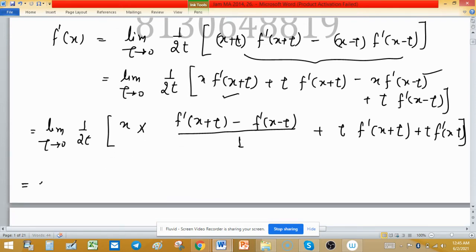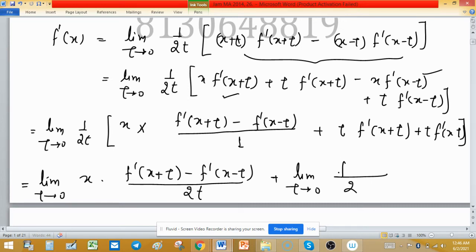Now, some manipulation. Limit t tends to 0, x outside, f'(x+t) minus f'(x-t), divided by 2t. Plus, limit t tends to 0, and t cancel out by t. So in denominator 2 we left, f'(x+t) plus, as t is cancelled out from these two terms, taking t as a common, so f'(x-t).